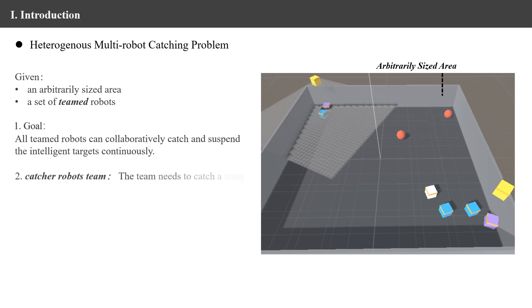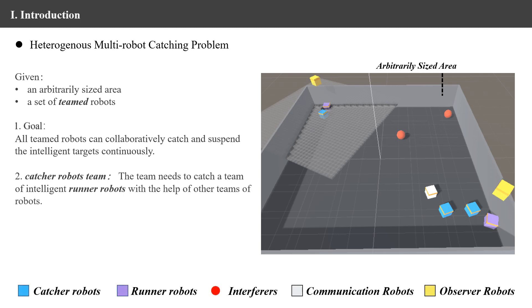In our setup, a team of catcher robots needs to suspend and catch a team of intelligent runner robots with the help of other teams of robots, including a team of observer robots and a team of communication robots.